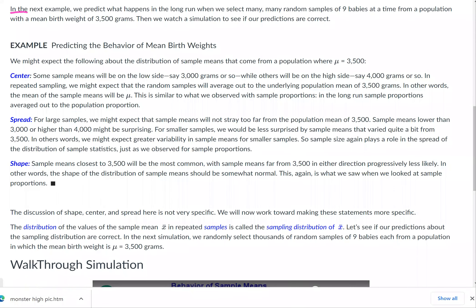In the example below, we'll predict what happens in the long run when we select many random samples of nine babies at a time from a population with a mean birth weight of 3,500 grams. Then we watch a simulation to see if our predictions are correct.